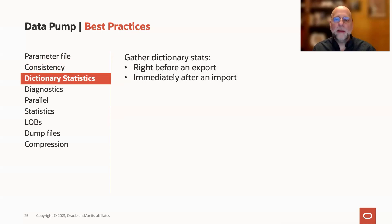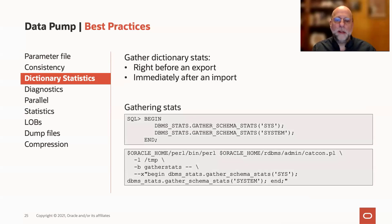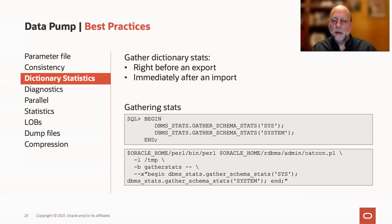We also advise gathering dictionary stats immediately after an import, because we will have added a lot of rows to all those dictionary tables as we create those metadata objects in your database. Having good dictionary stats is just good for performance across the board. We recommend gathering schema stats on Sys and System — individually with the first statement shown, or across an entire multi-tenant container database using CatCon, as shown in the lower statement.